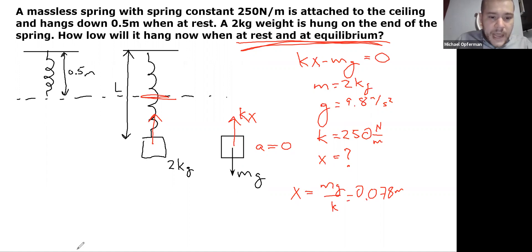Remember that x is going to be a vector which points from the rest length to the object's location. So that is x. I calculated the magnitude of x is 0.078 meters. And I can see from my picture, this is going to be 0.5 meters to the rest length, and then it's hanging x down from the rest length.